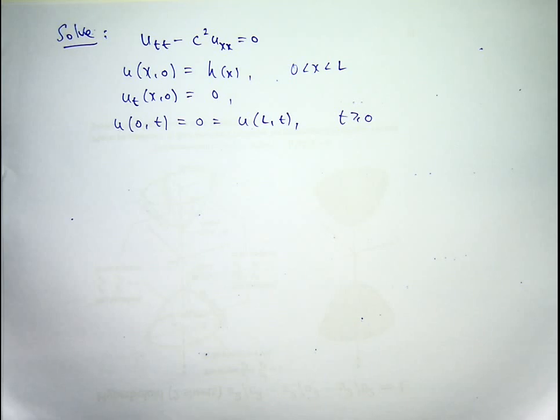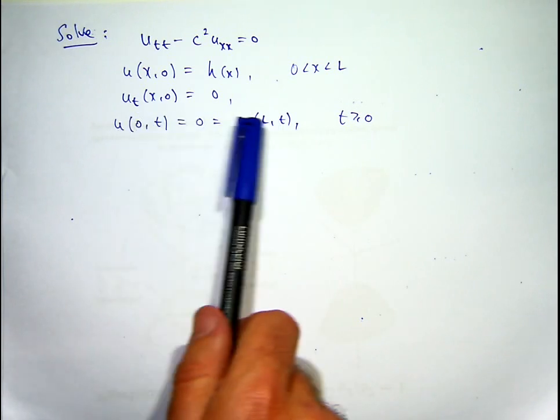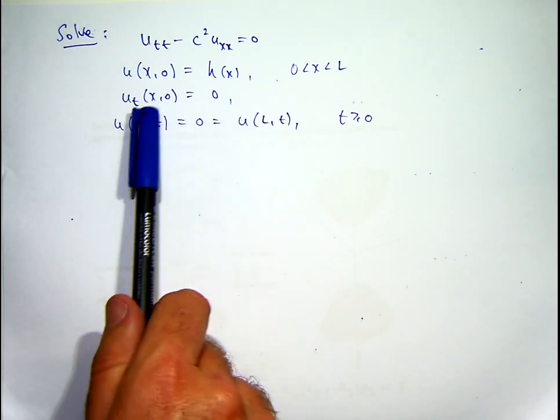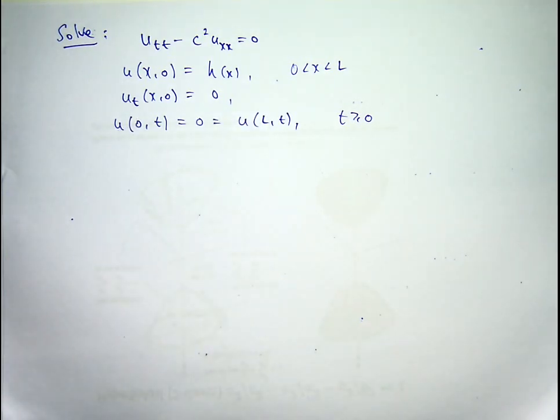And now we've got two extra pieces of information: boundary conditions or side conditions. So from a physical point of view, what do these side conditions mean? It means that you've got a string of finite length, and you've got the ends clamped or fixed. So the ends can't move around.